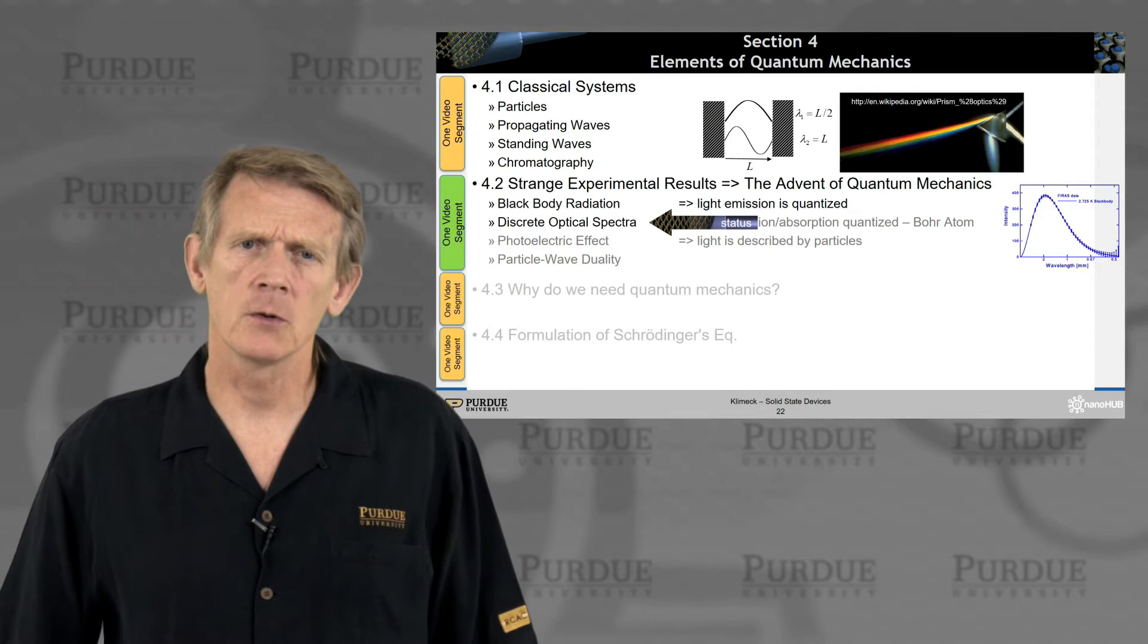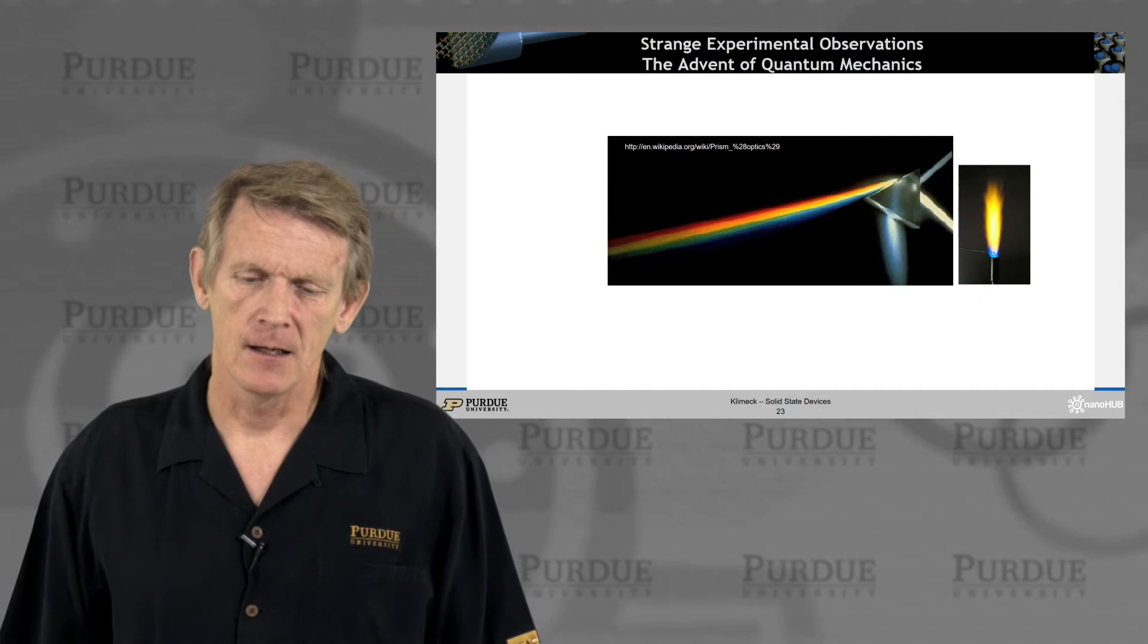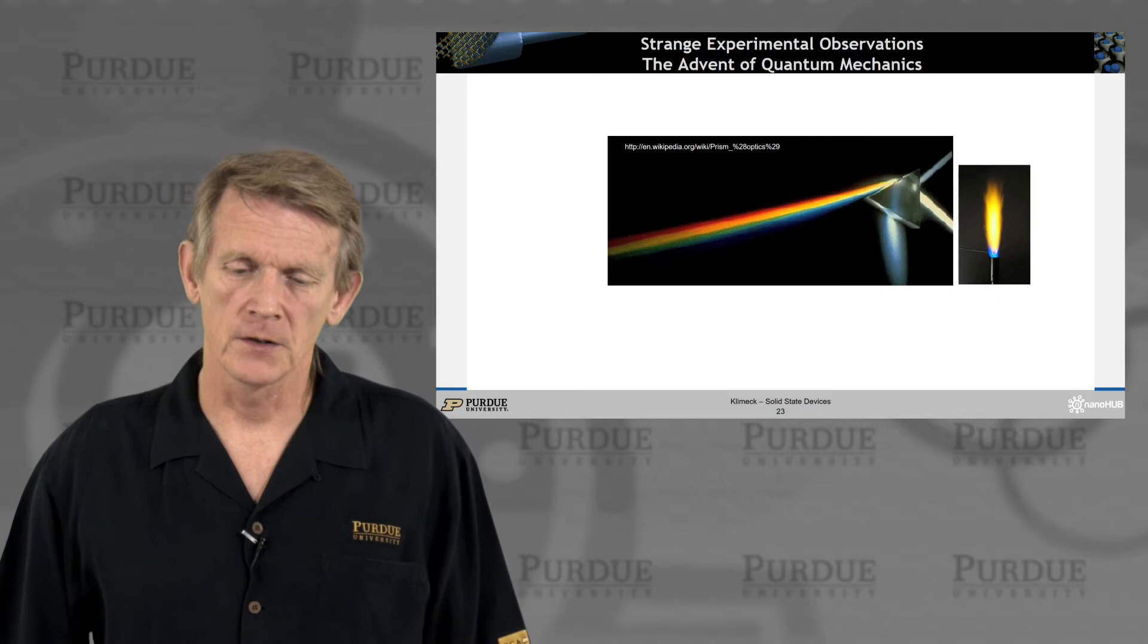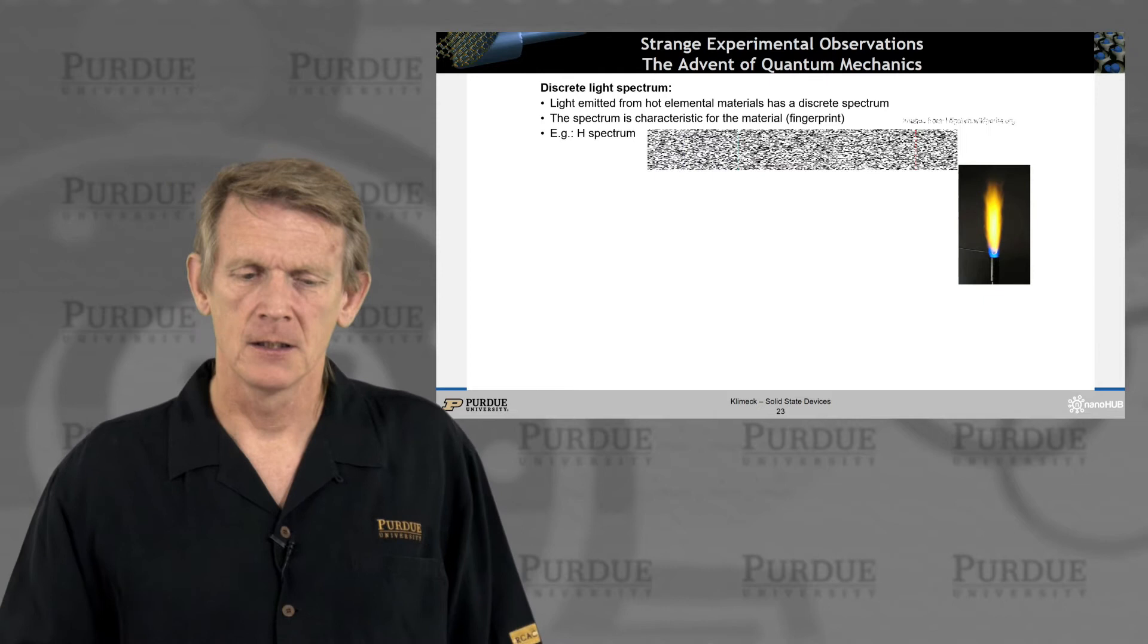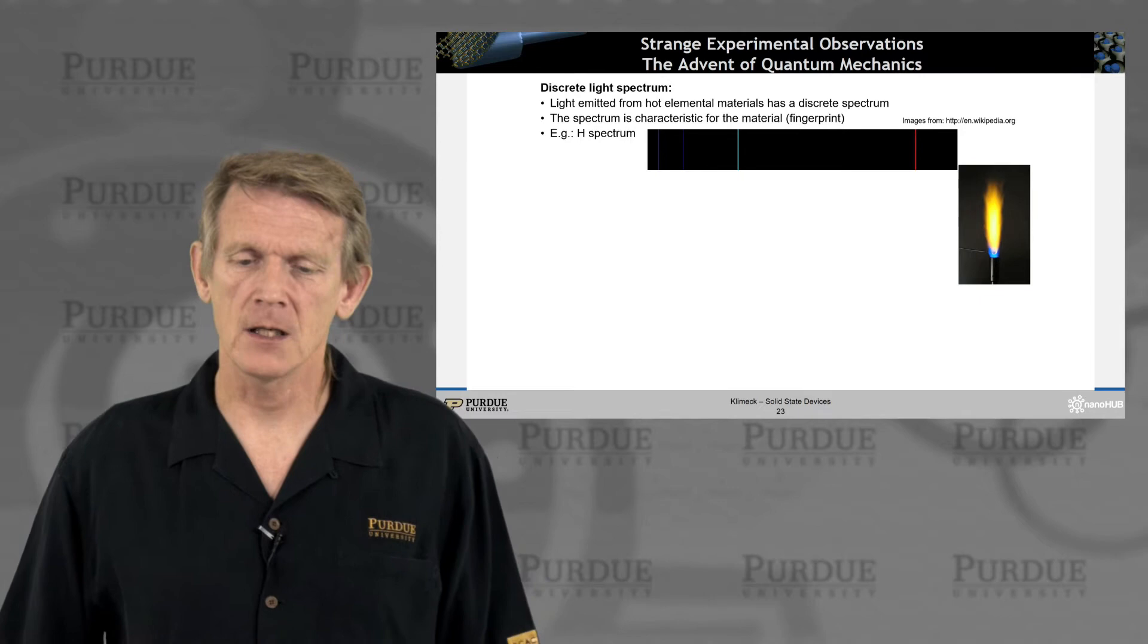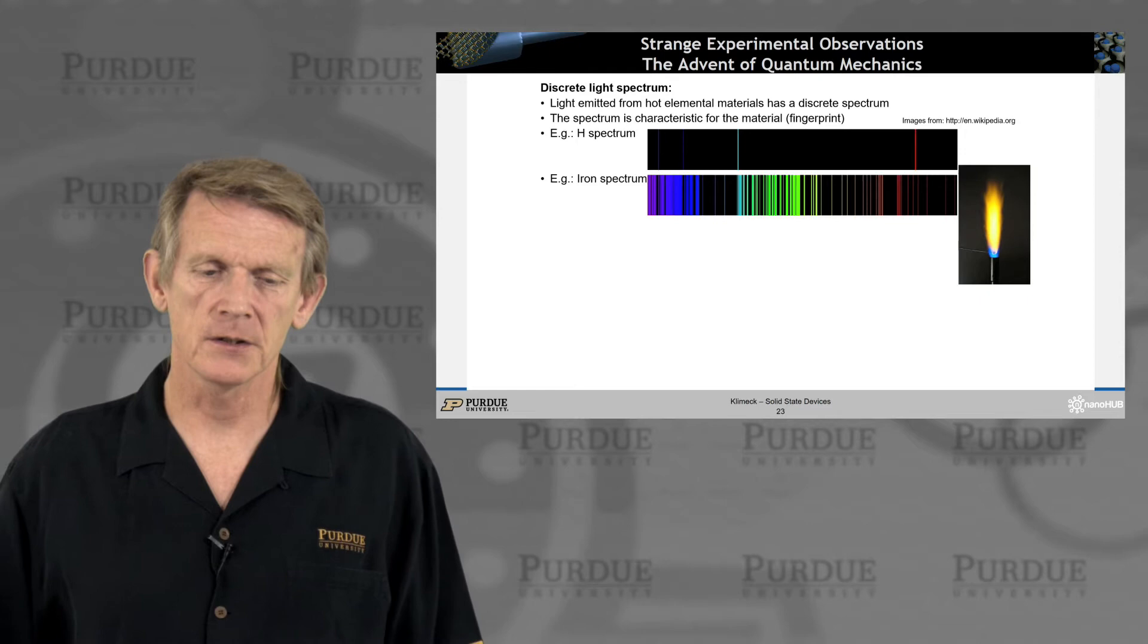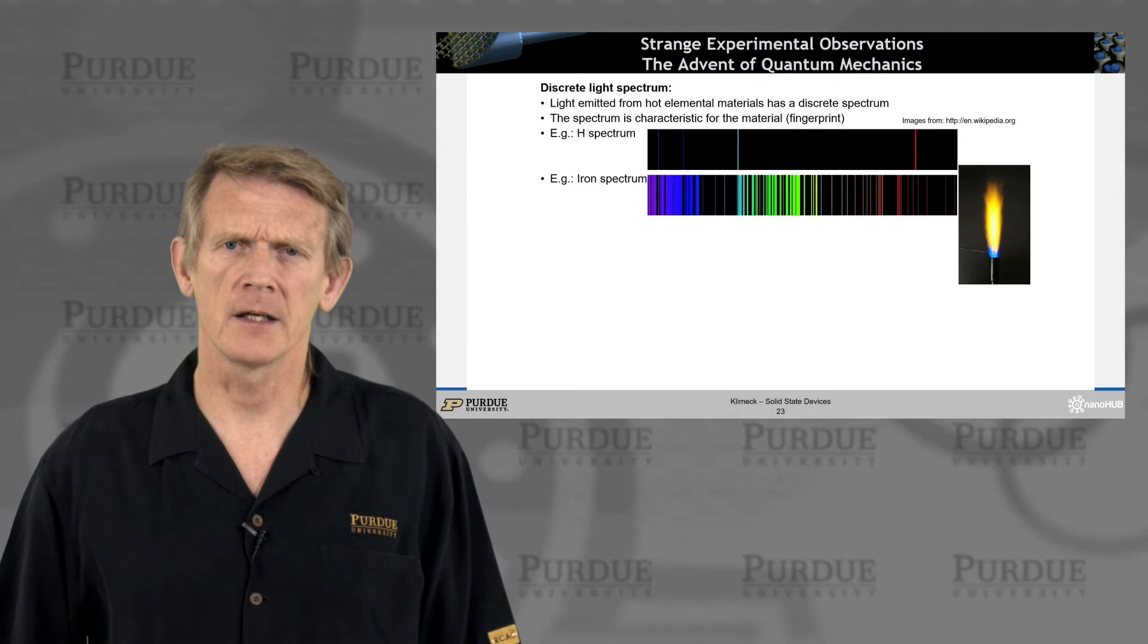All right. Let's look at something else that was throwing people off in their understanding of physics. Well, people like to light things on fire, right? And there have been experiments where prisms were being used to analyze light. It was an understanding that white light splits out into a rainbow of many colors. And it turns out if you do that experiment on chambers of materials and look at light emission from, say, helium, hydrogen, or iron, you see that these materials have all different spectral lines.